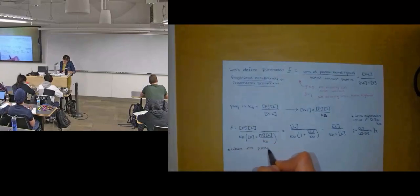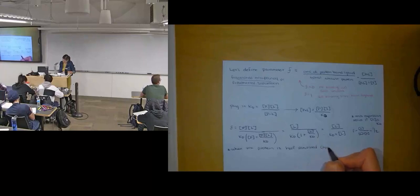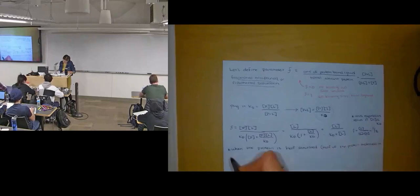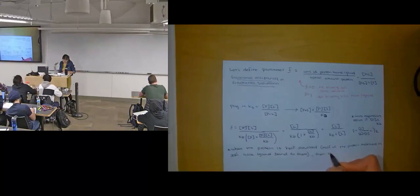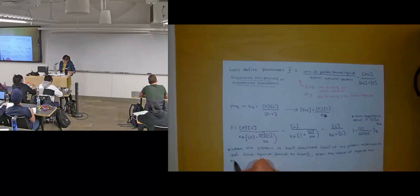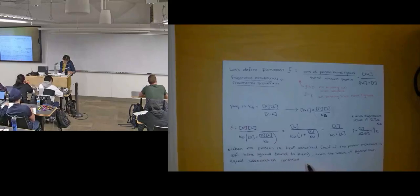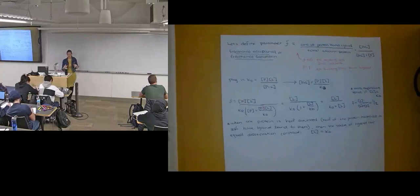When the protein is half saturated, meaning half of the protein molecules in solution have a ligand bound to them, then the value of the ligand concentration will equal the dissociation constant. So this is how we can obtain the dissociation constant.